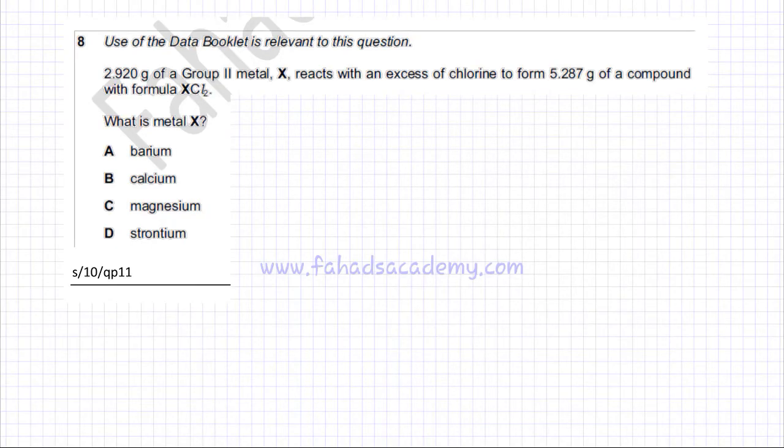The following question is about moles and ratios. You have 2.920 grams of a Group 2 metal, and it reacts with an excess of chlorine to form 5.287 grams of a compound with the formula XCl2.